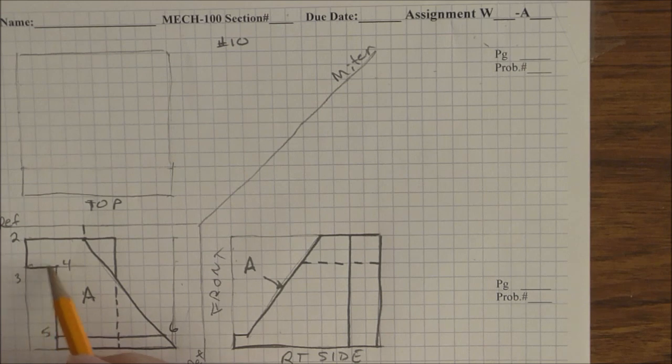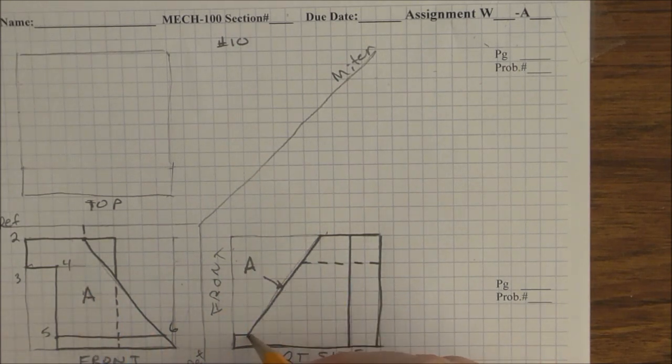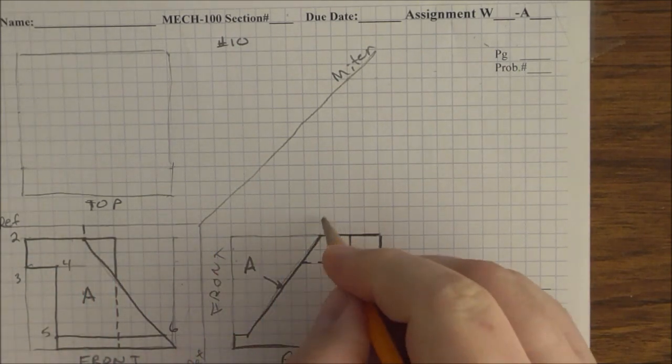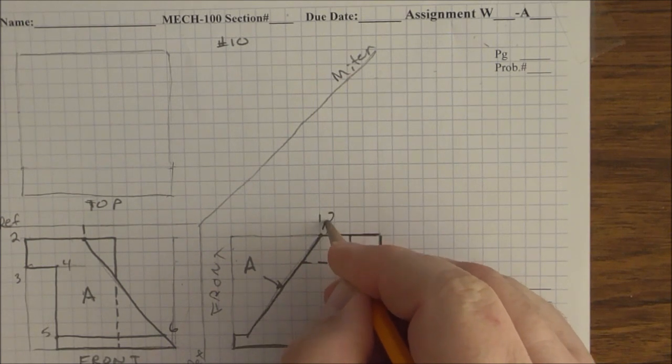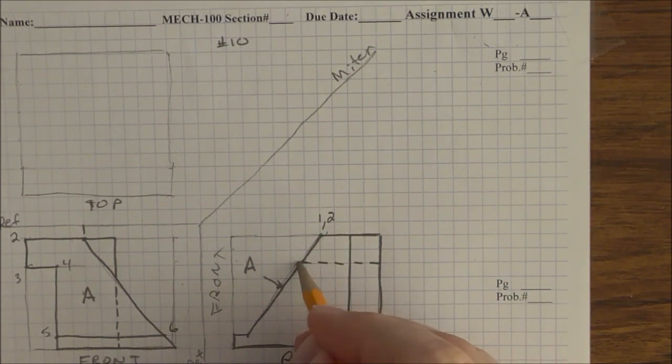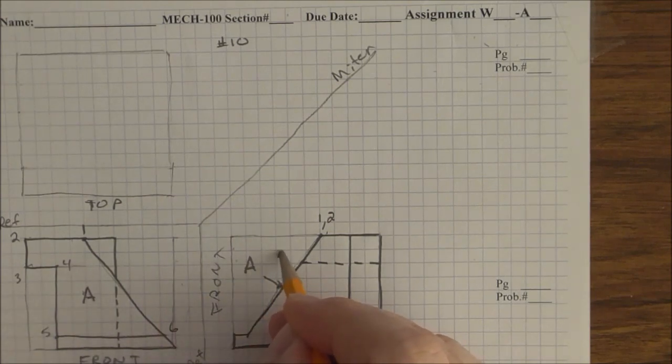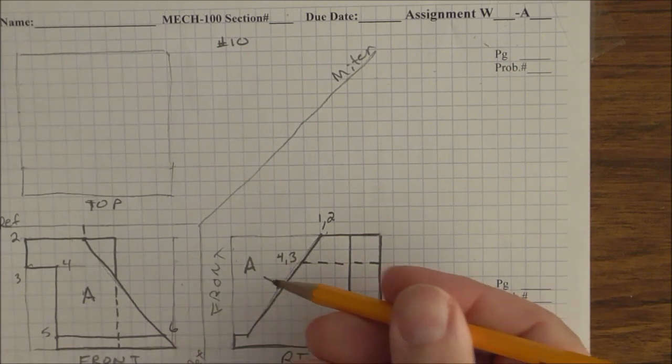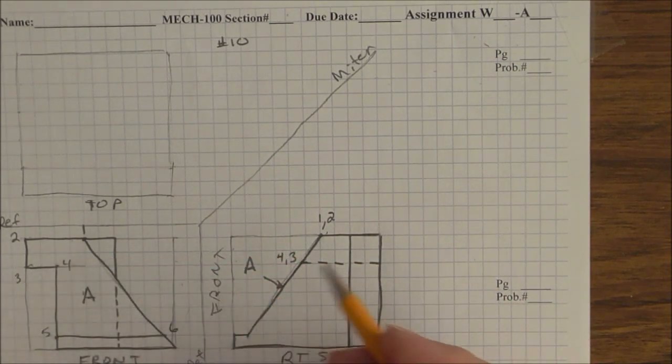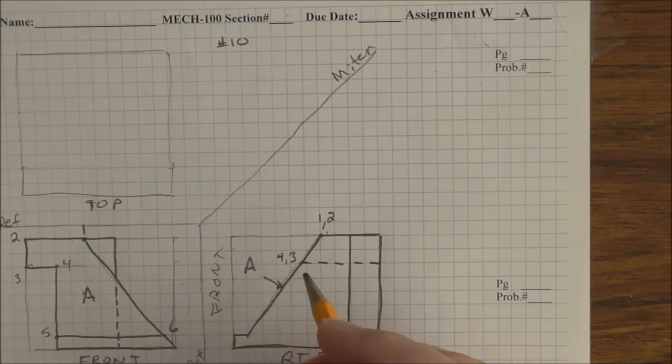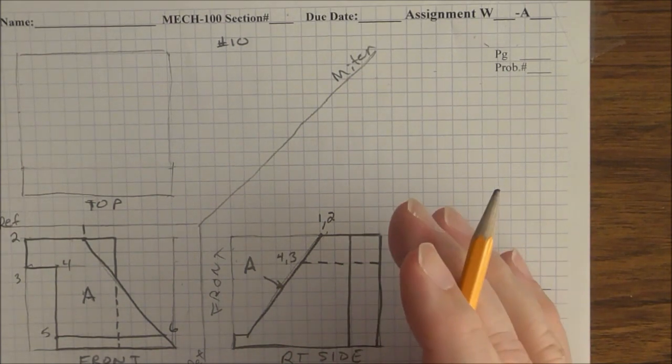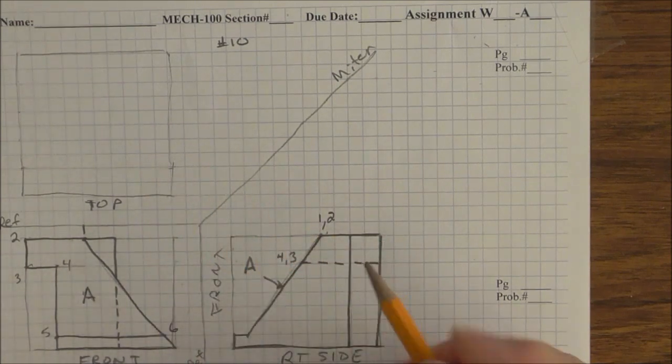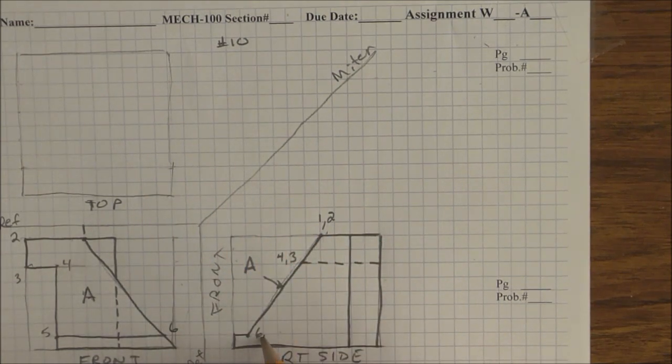Now that we have defined the perimeter of A, we are going to take those points and project them back to A in the other view. So 1 and 2 are up here and they're on A. So 1, 2, right here, projecting across. 4, 3. Again, 4 is, if you're looking this way, 4 is seen and 3 is behind it. So you say 4, 3. If you write them down backwards, 3, 4, doesn't matter. You're going to get the same solution in the top view anyway. Down here, this point is 6, 5.